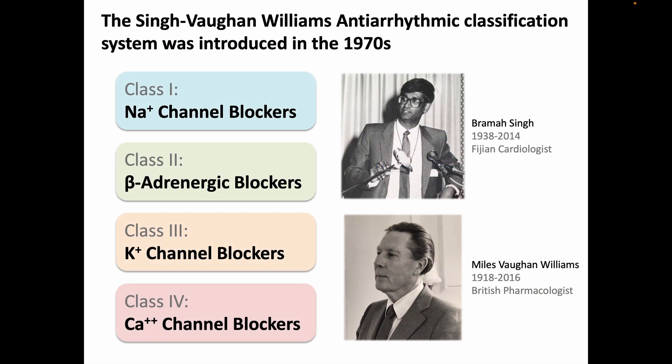It was Brahma Singh and Miles von Williams who introduced what we now consider the classic anti-arrhythmic classification system in the early 1970s. Class 1 agents are sodium channel blockers, class 2 are beta blockers, class 3 are potassium channel blockers, and class 4 are calcium channel blockers.